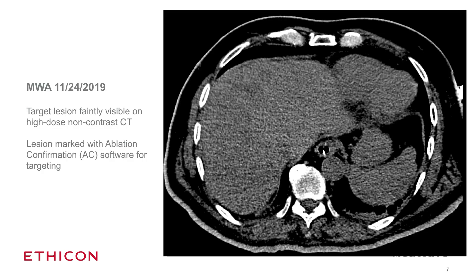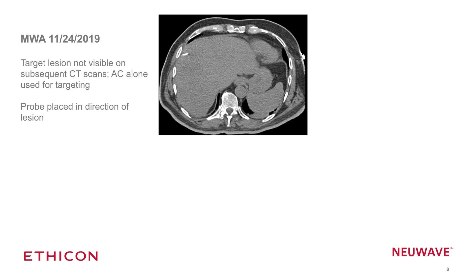We chose to bring the patient back for a repeat attempt at ablation. This time we could faintly visualize the lesion on non-contrast CT using full dose, and we marked that lesion using the ablation confirmation software to help us target it. When we can't see the lesion on ultrasound but can target it based on CT, we use the ablation confirmation software to target the lesion.